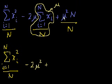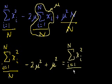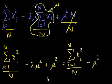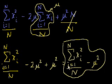So this simplifies to: the sum from i equals 1 to n of x sub i squared over n, and then minus 2 mu squared plus mu squared. Well, minus 2 mu squared plus mu squared is just minus mu squared. So we've come up with a neat way of writing the variance: you take the average of the squares of all the numbers in the population, and then subtract from that the mean squared of the population. Depending on how you're calculating things, this may be a slightly faster way of calculating the variance.